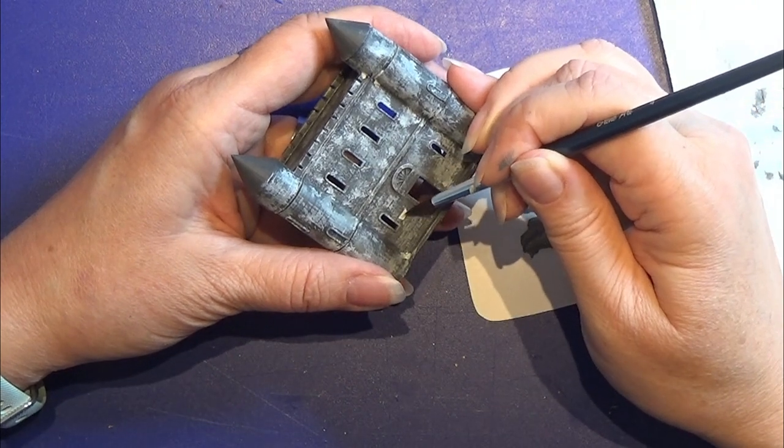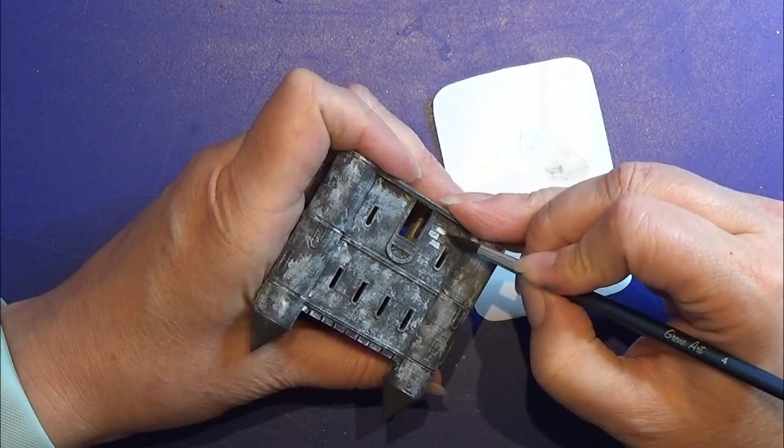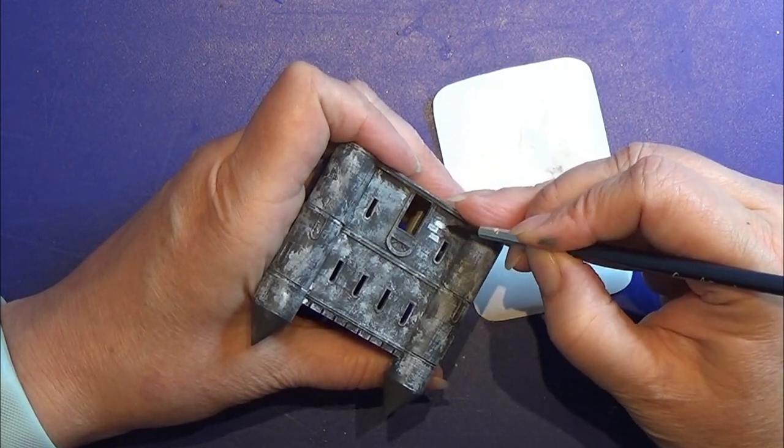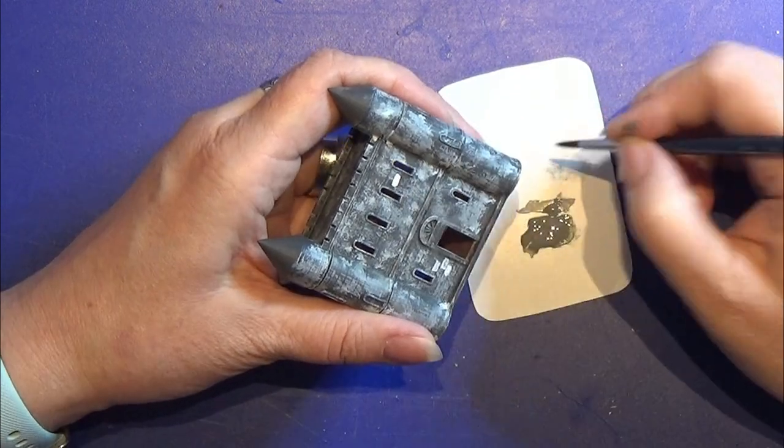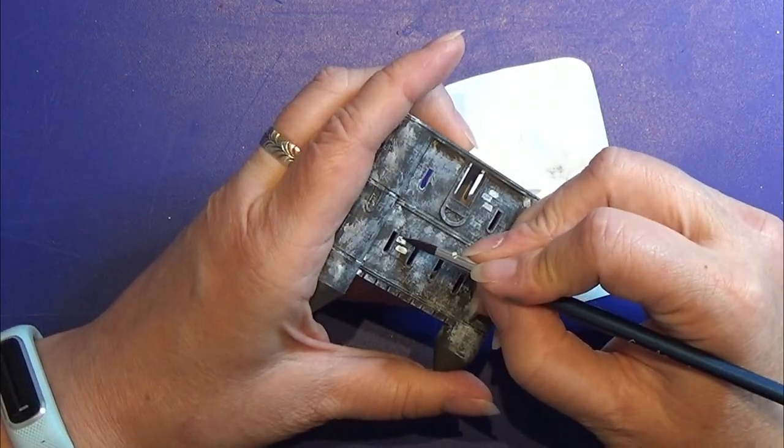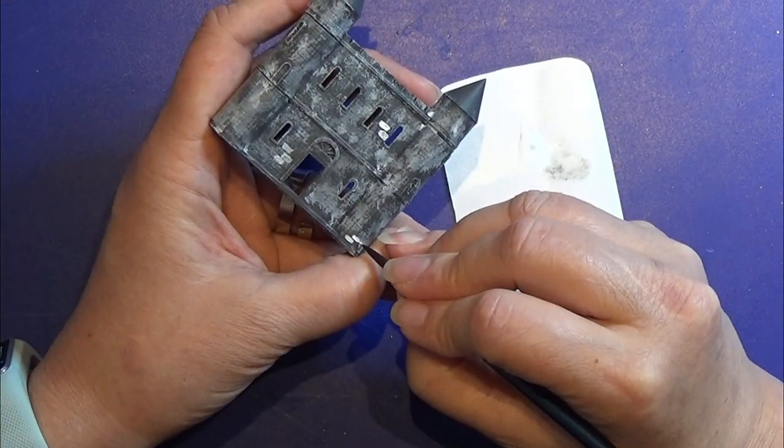Then with some white paint on a tiny paintbrush, I am painting on a few bricks here and there on this castle. First some in white, and then later some in a light gray color. I'm doing this all over the castle to make it look more real.